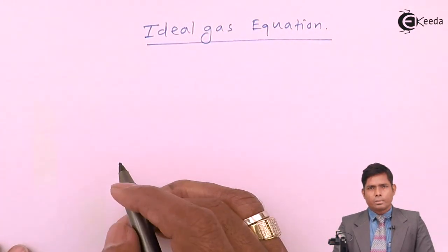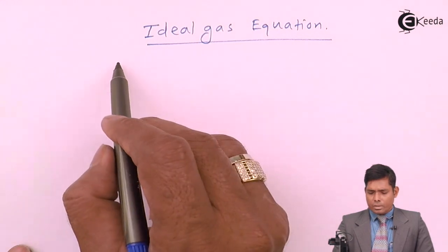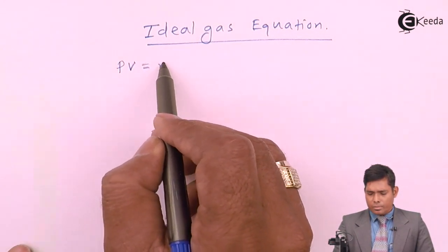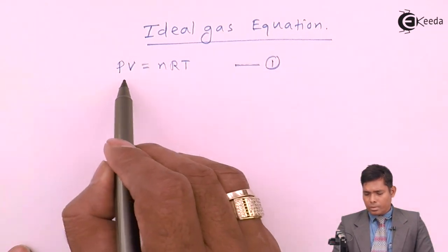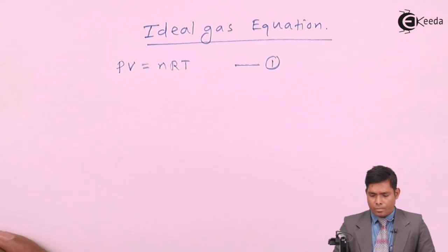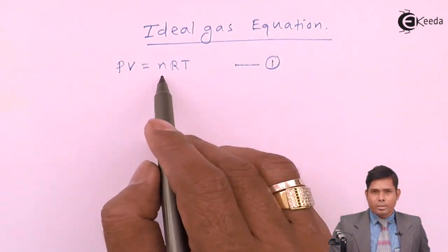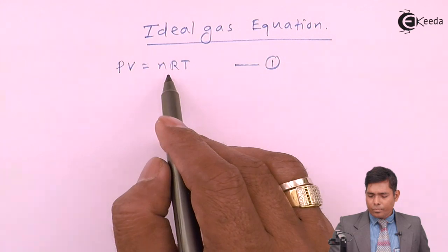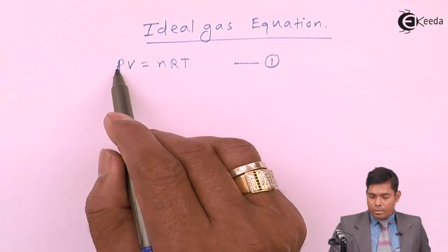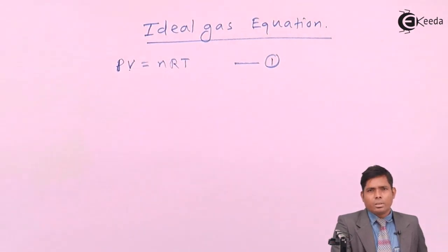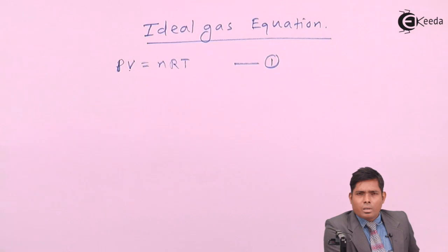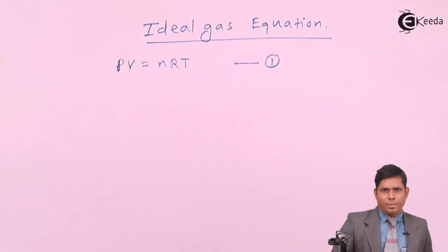The ideal gas equation is PV = nRT. Here, P is the pressure of the gas, V is the volume of the gas, n is the number of moles, R is the universal gas constant — which remains constant for all types of gases — and T is the temperature in absolute scale.